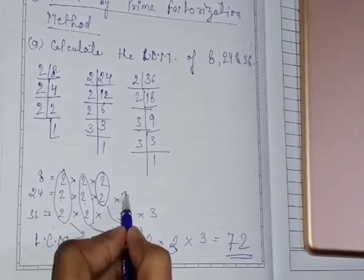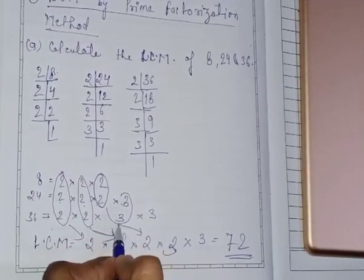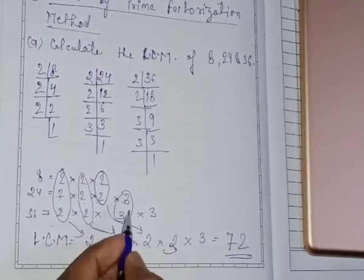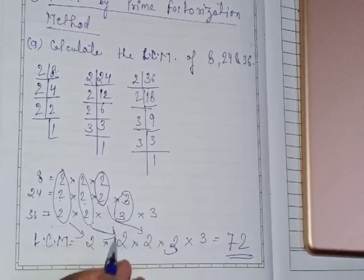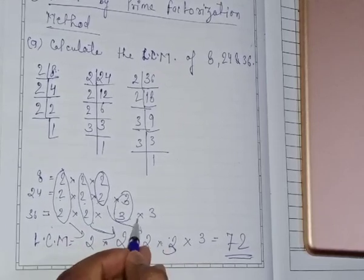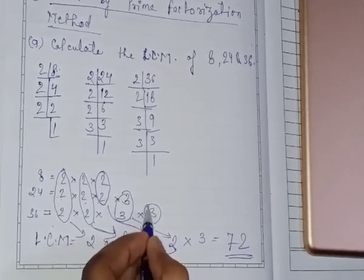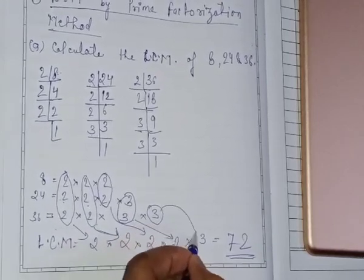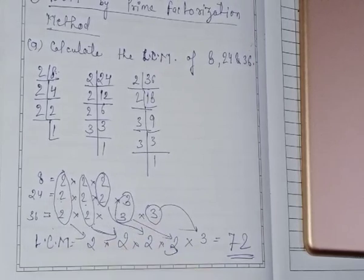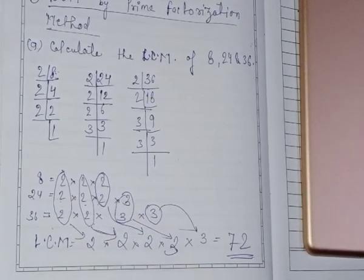Now, this 3 is common in these numbers, so we will write this 3. And this is the remaining one, that is 3, so we will write it like this.